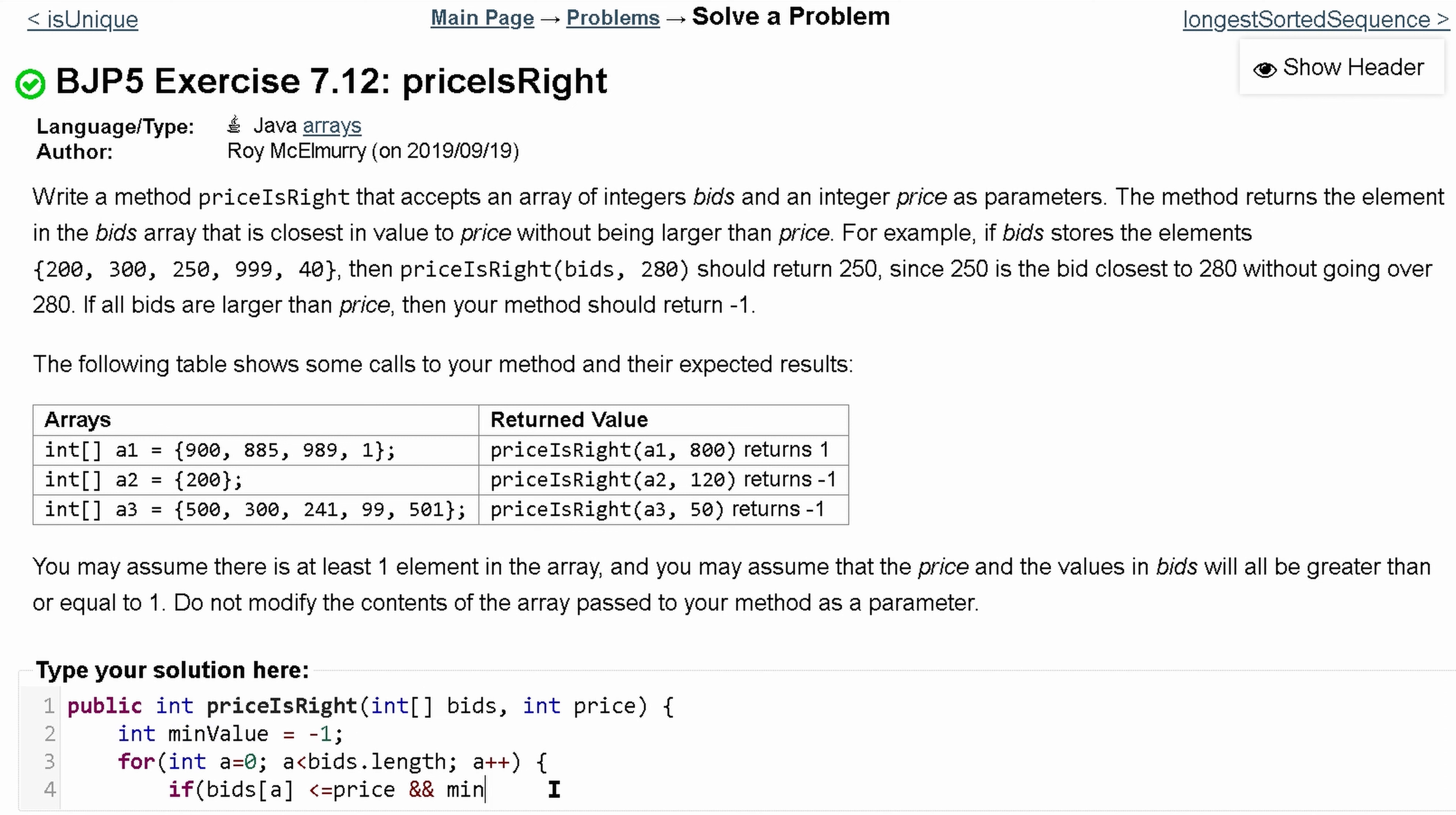We have to make sure that if our minimum value is less than or equal to the current element, we update it as well. So we're going to have minValue is less than, we'll just do less than, we'll have bids with this index. And then inside of our if statement, we'll just have our minValue updated so that it's now equal to bids with a like this.